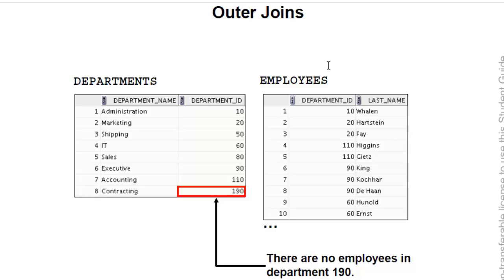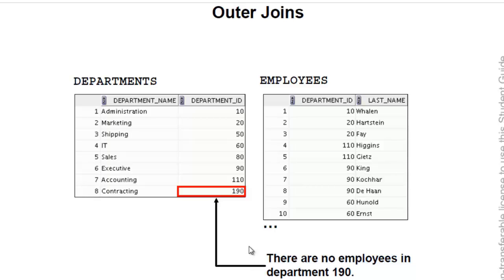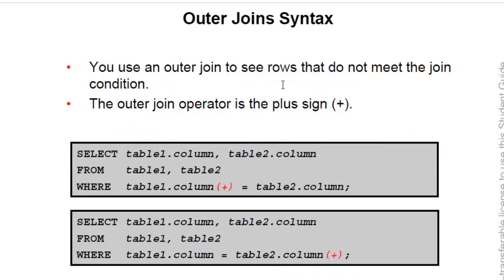Hello friends, welcome to OCP Technology. My name is Sripal and today I'm going to demonstrate auto join. What is auto join? Suppose we have two tables — one is the departments table and the second is the employees table. In the department table there are no employees in department number 190, and you want to find out that record which is not present in the employee table. You use the outer join to see the rows that do not meet the join condition.